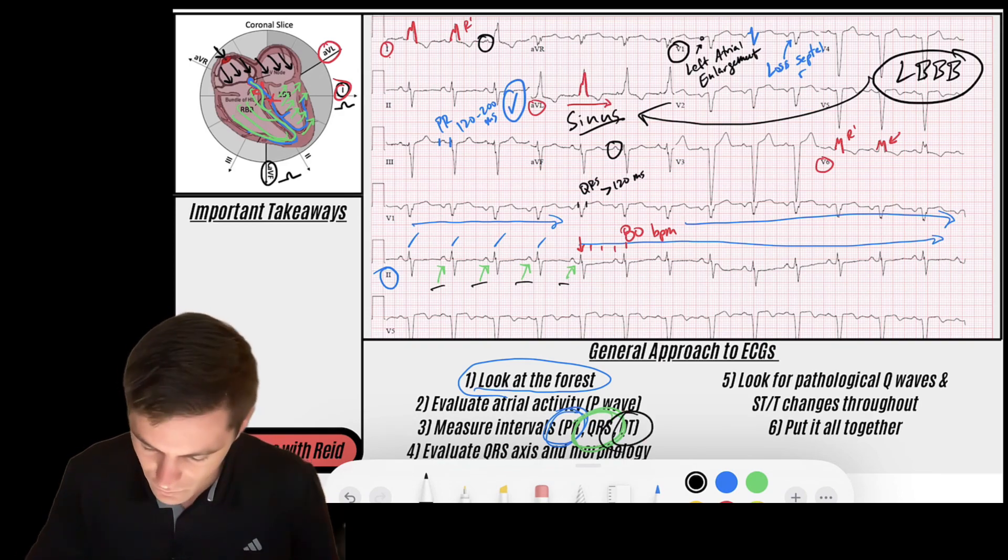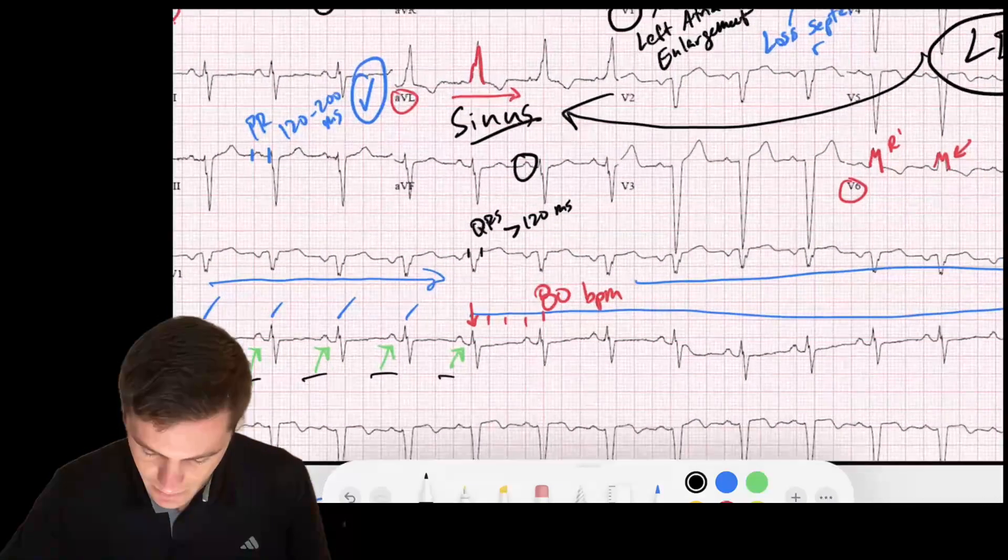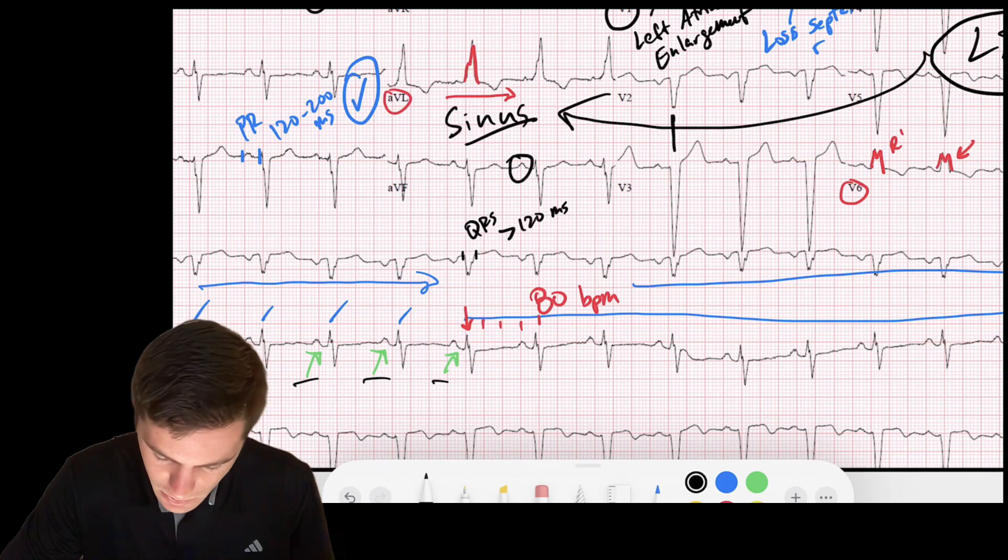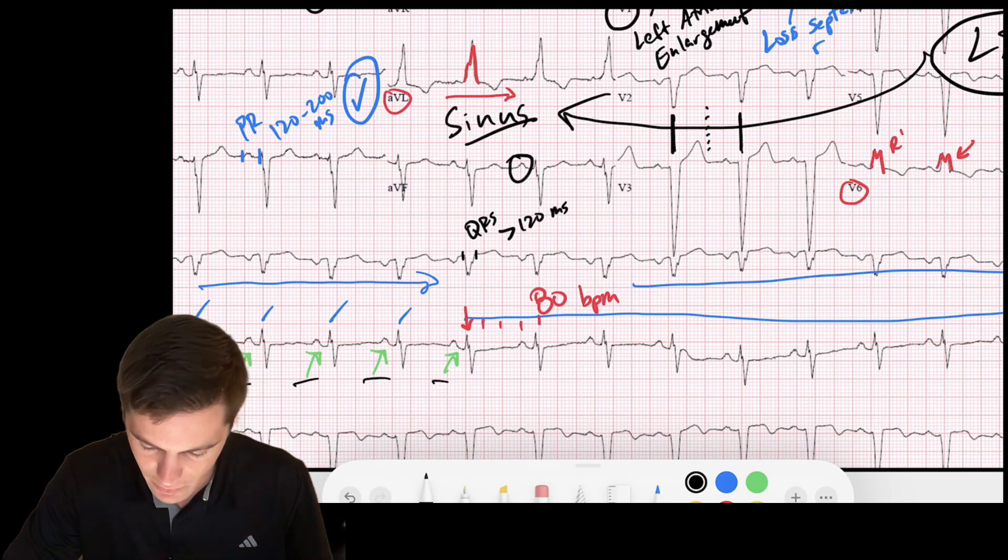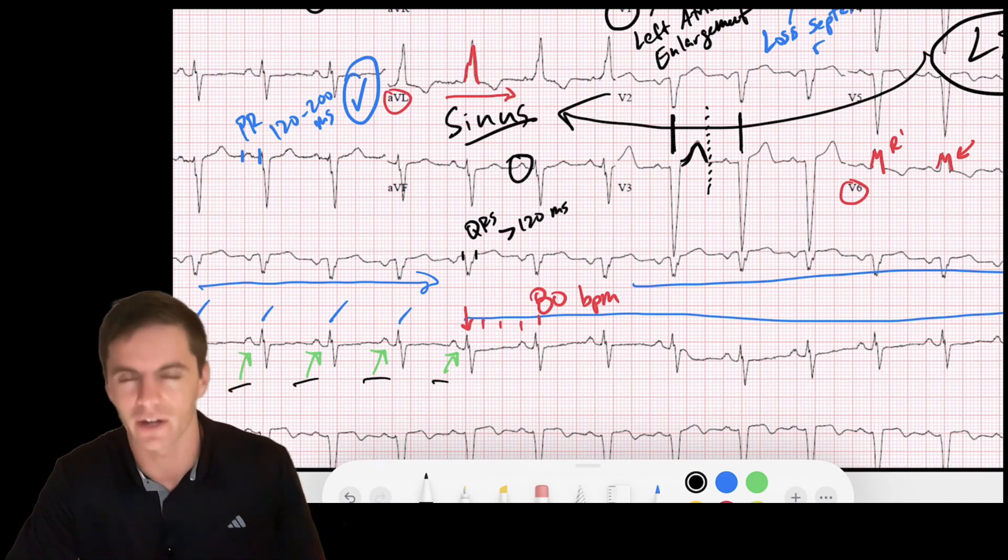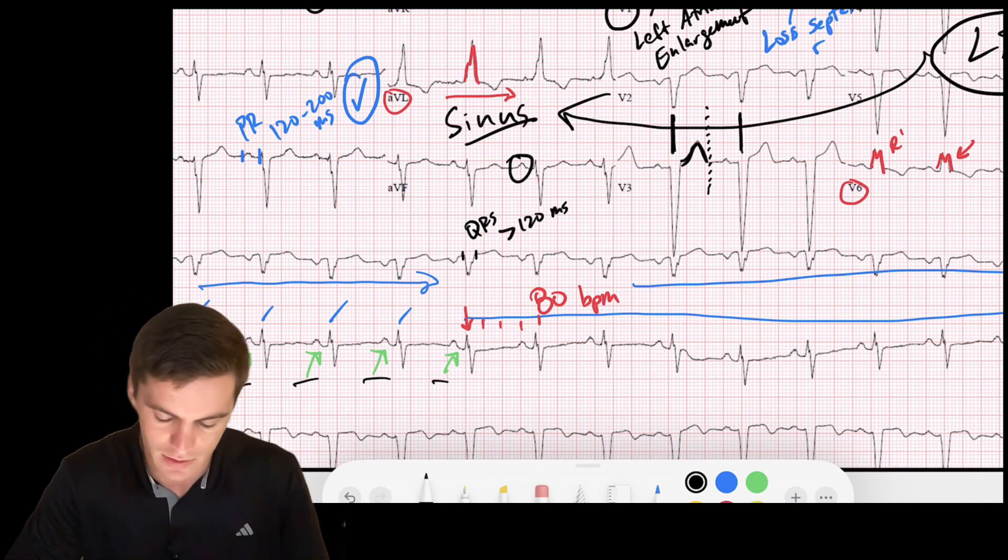All right, let's take a look at our QT interval. So the next thing we need to do is look at our QT interval. I'm going to pick maybe two QRSs. We'll choose these ones. Here's a QRS. Here's a QRS. I'll draw a dotted line halfway through. I want to make sure that my T wave ends before there. That's kind of my eyeball QT test. And the QT looks good.